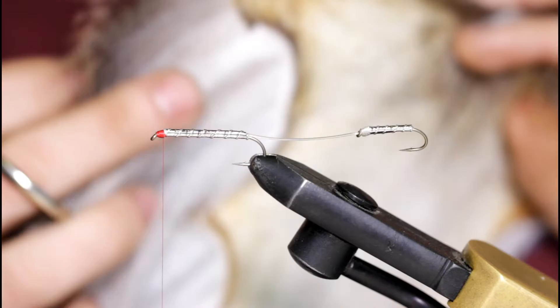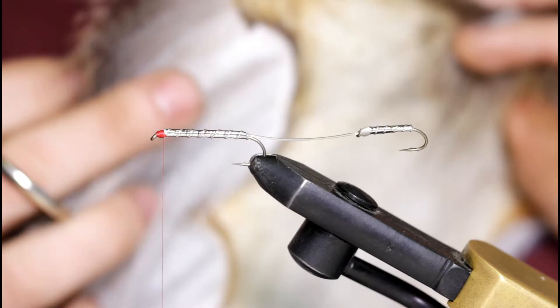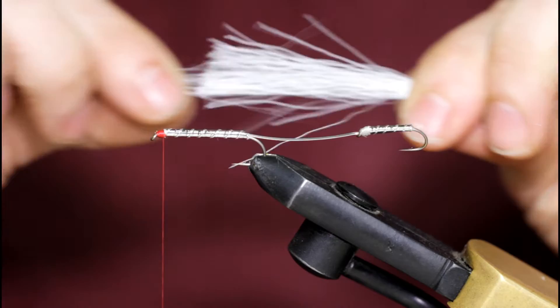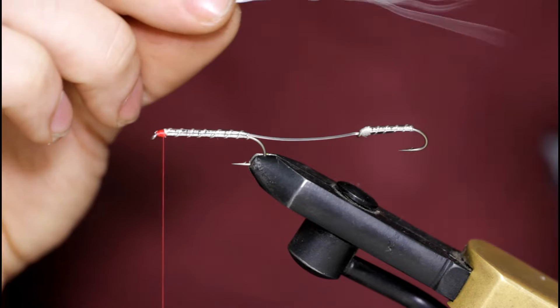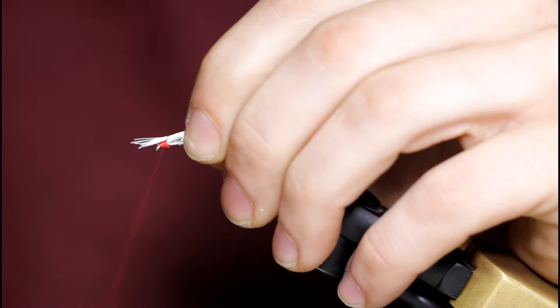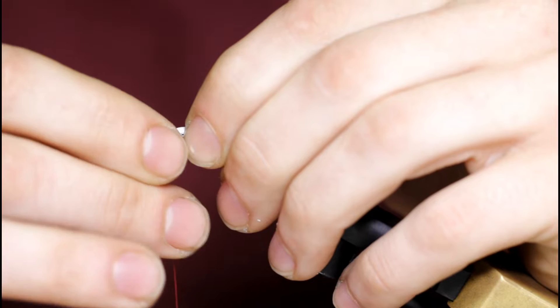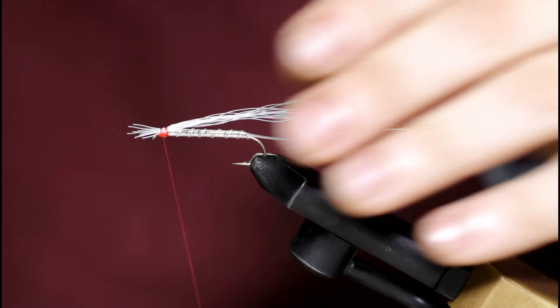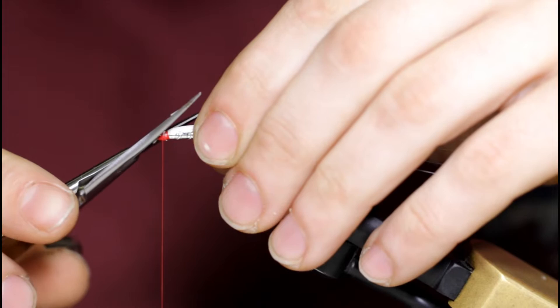And come in with some bucktail. I'm going to use the white from the inside. So I'm just going to pull out the short and fuzzies from the bottom here. And keep pulling away until I'm left with a sparse clump here. I'm just going to tie it in on top. With a few wraps. A few more wraps to secure it. Snip off the butt ends here. Now I'm going to bring the thread back up.